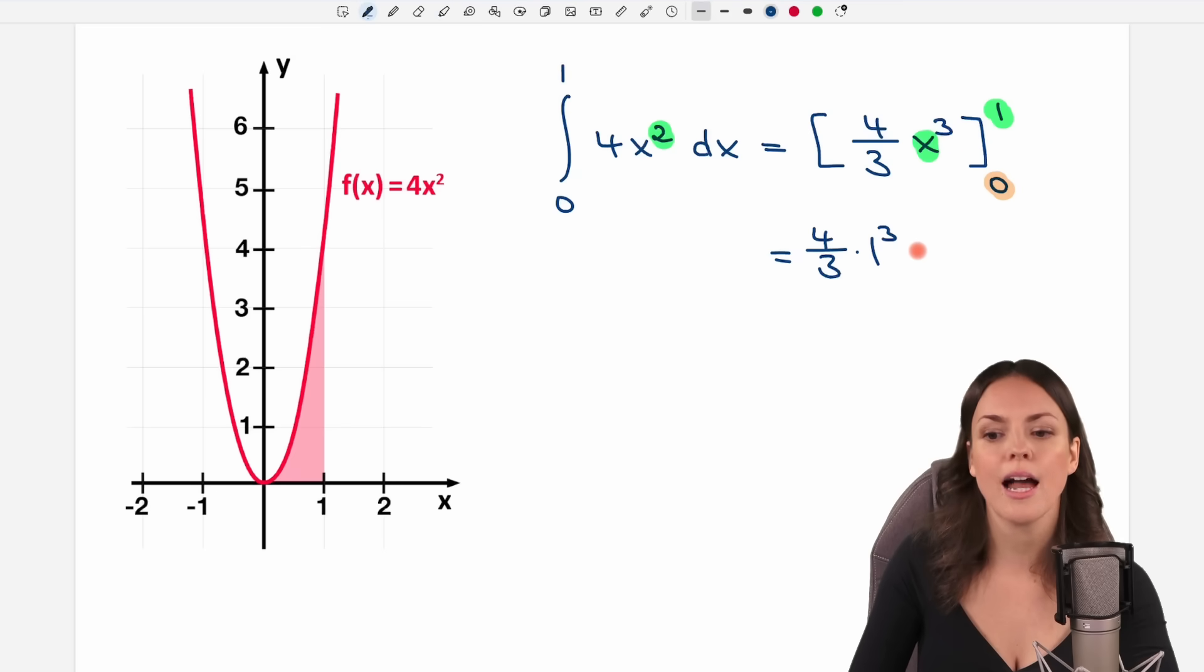I do the same thing with my other limit here, but in between I'm always going to write a minus. Then I write down everything else, and as soon as I get an x, I'm going to insert a 0 here and raise it to the power of 3.